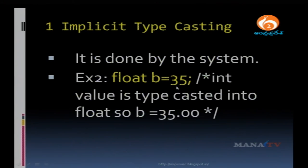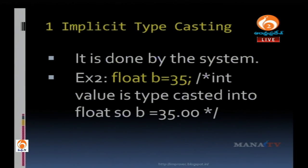Example 2: float B equals 35. Here 35 is an integer that is type casted — converted into float — so B equals 35.000.